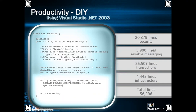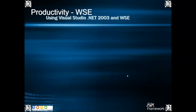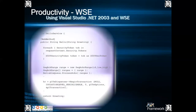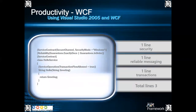Earlier in web services, we had to write around 20,379 lines of code for security to get a secure service — total 56,000 lines for example. In WCF, for security you just write one line: the attribute ServiceContract with SecureMode equals Windows — and you get security. For reliable messaging — where whatever data you send or receive should be reliable — you need to write only one line of code.